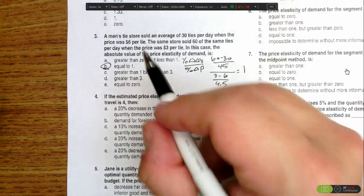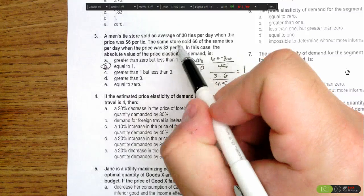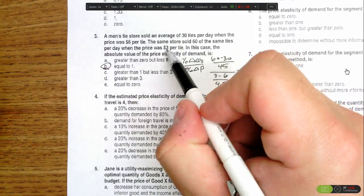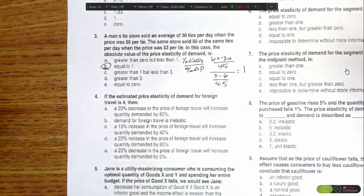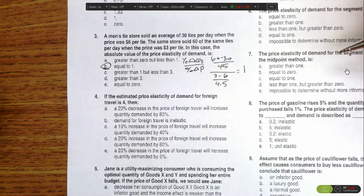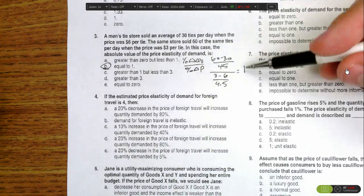You can say that total revenue before was $6 times 30 ties is $180. Now with this change, $3 a tie, 60 sold is still $180. So we know from looking at the total revenue test that total revenue stays the same when we're at unit elastic, which would be 1.